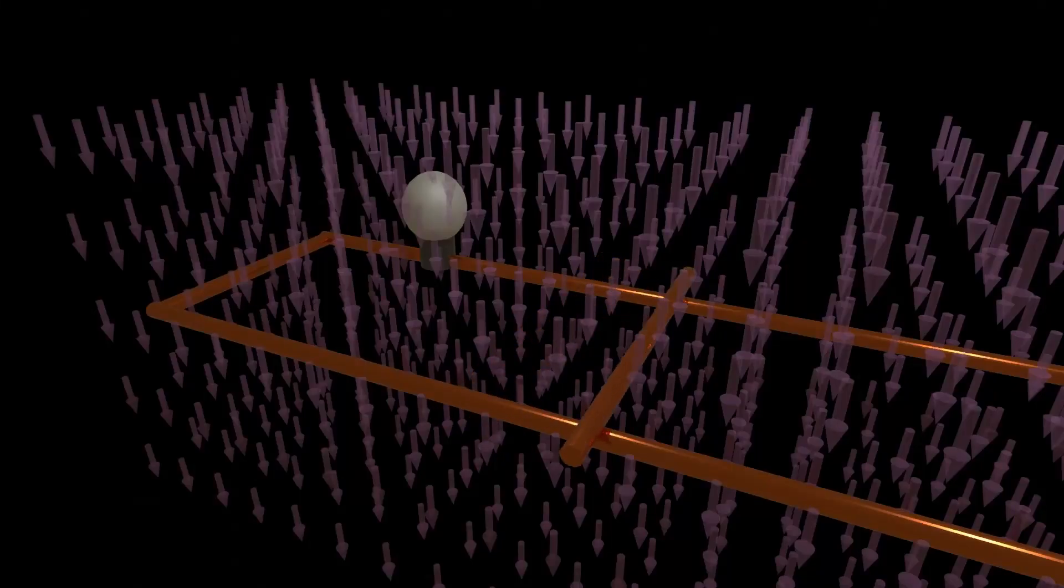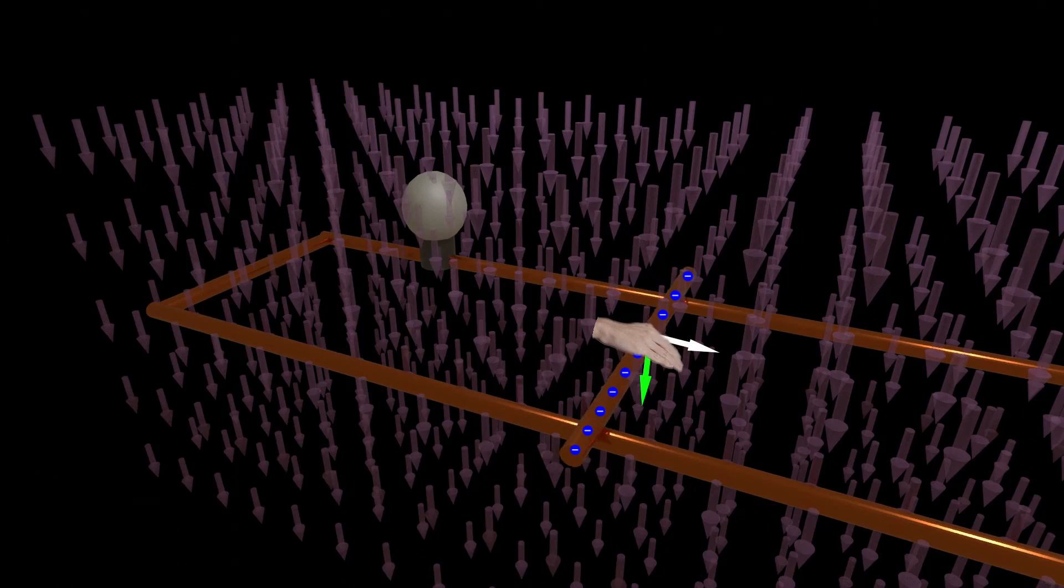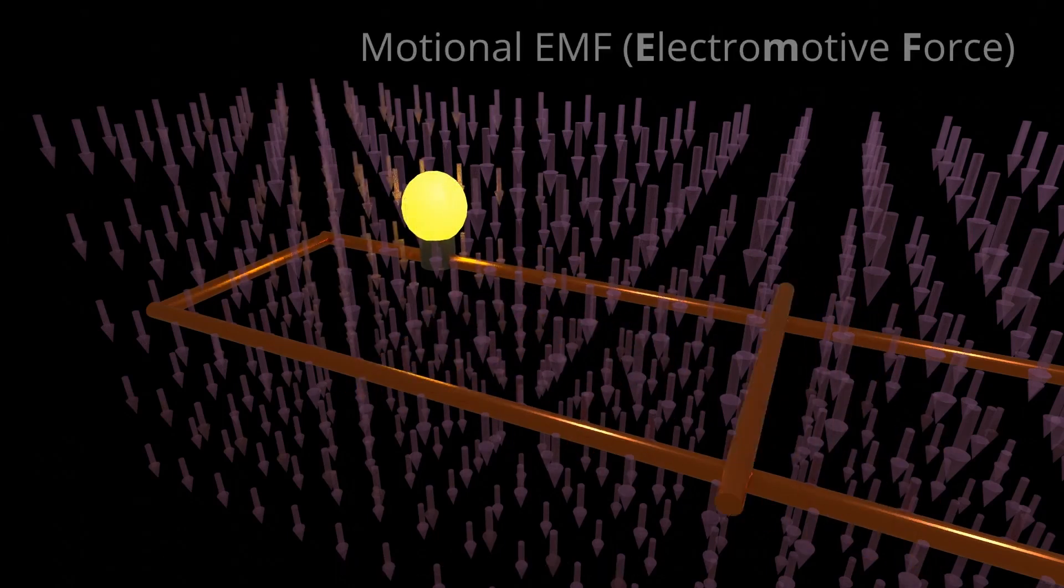Experiment time. We move our wire sideways. Barry's pointing this way then sees the electrons in the wire moving. He points in the direction they're moving, curls towards his own arrow and bam, a current starts flowing. This current came from Barry so we call it motional EMF.